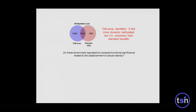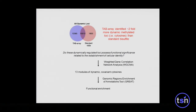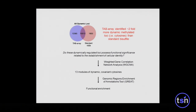In order to understand if these dynamically regulated loci have functional significance, we used WGCNA, a statistical program in R used to detect covariance. We were able to identify 13 modules of dynamically regulated covariance cytosines, and we reasoned that the genomic location of these cytosines and the underlying genes would probably be involved in developmental pathways or genes that regulate cell specification to these two different lineages. We then used GREAT to test for functional enrichment of genes regulated by these cytosines.